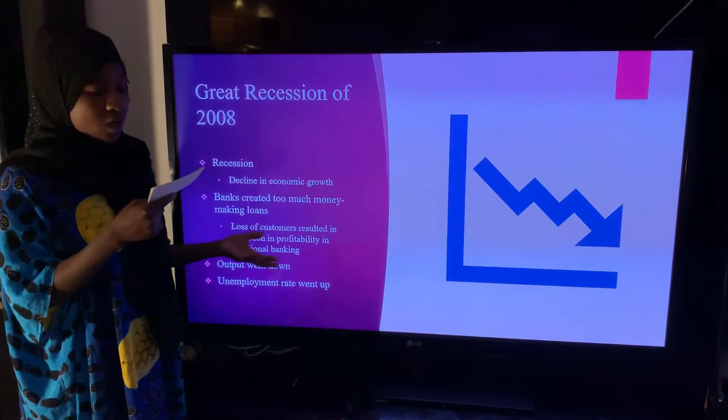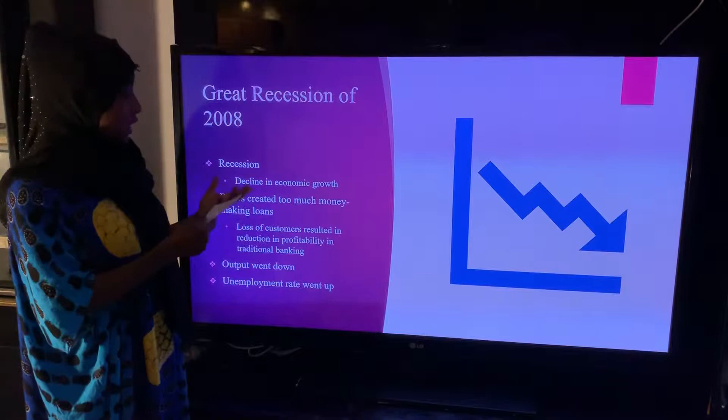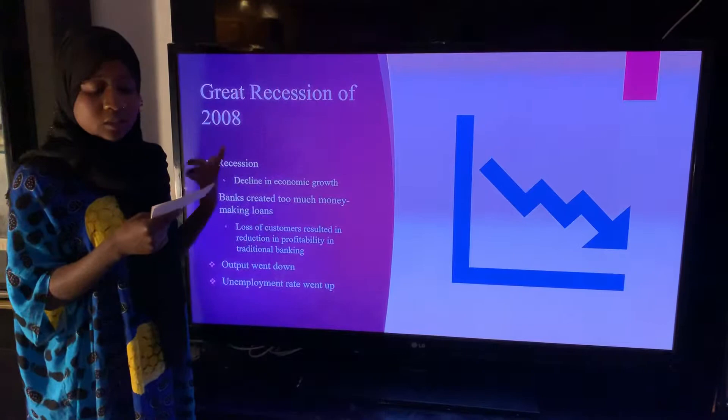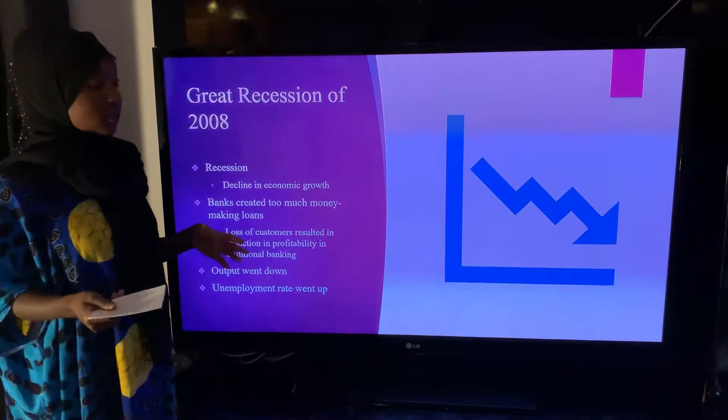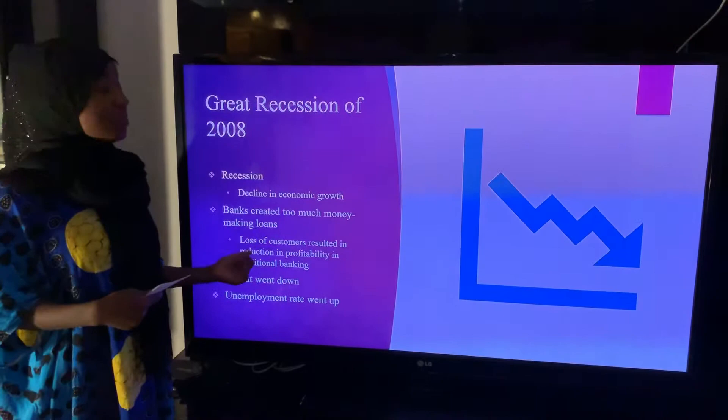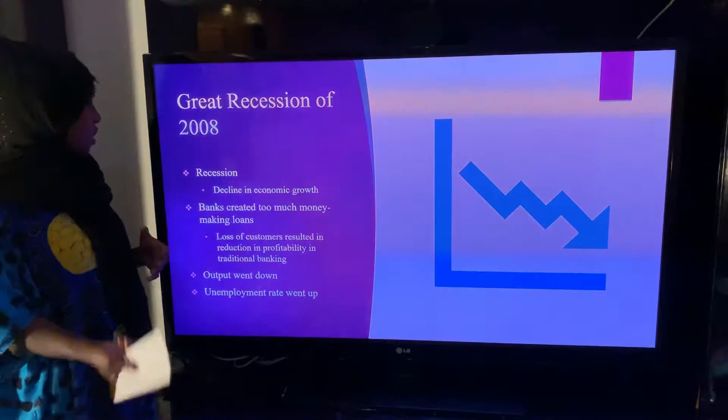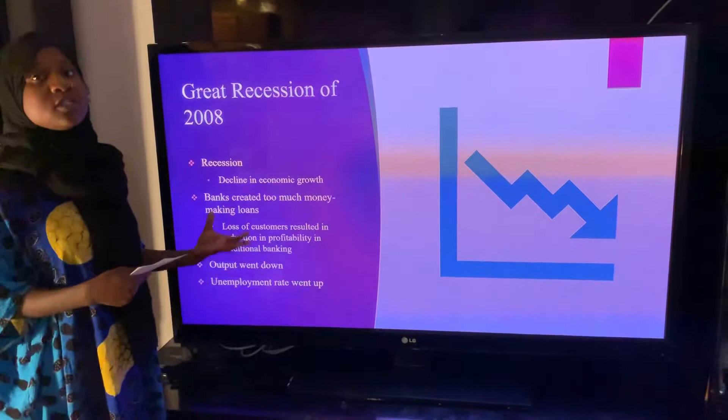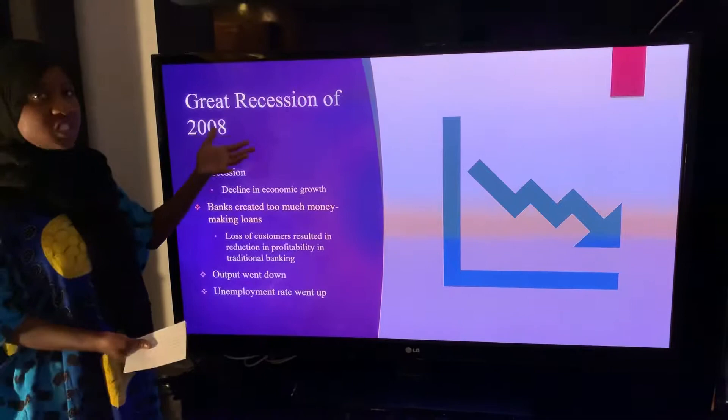Some of the things about the recession include the drop in real GDP, the drop in income, the downfall of employment, manufacturing, and retail sales. The reason why this recession happened in 2008 was because banks created too much money making loans, which caused the loss of customers. The loss of customers resulted in the reduction in profitability in traditional banking, making it hard for consumers to trust the banking system. They lost faith in their government, and that's when the recession started completely.